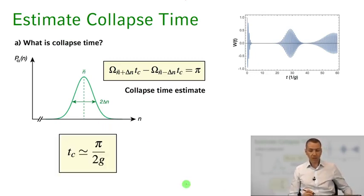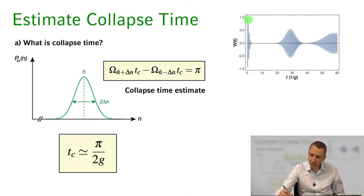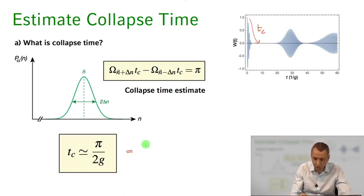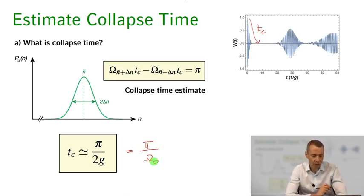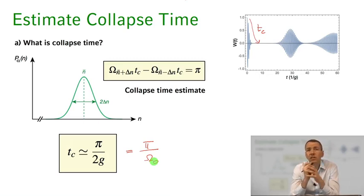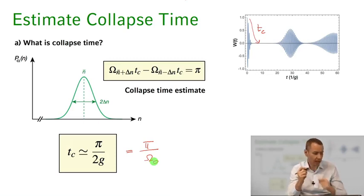So the collapse time — the timescale for the Rabi oscillations to decay — is t_C ≈ pi over 2g, which is equivalent to pi over the vacuum Rabi frequency omega_0 in our system. You see the only thing that determines this timescale for the collapse is the coupling strength of the atom to the light field. The larger the coupling strength, the faster the decay; the smaller the coupling strength, the longer this timescale.